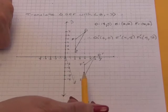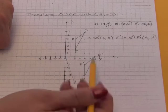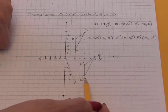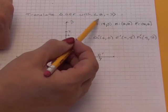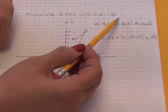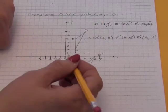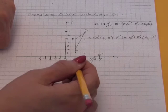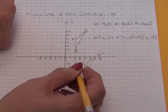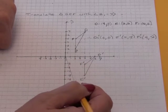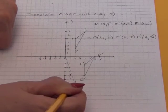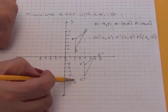A translation just moves the figure in a particular direction. And we can figure out the direction easily by using this transformation definition to create what we call a vector. So I graph positive 2, negative 7, right over here. And then I draw an arrow from 0, 0.